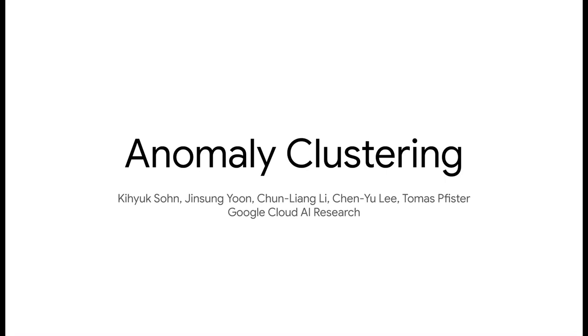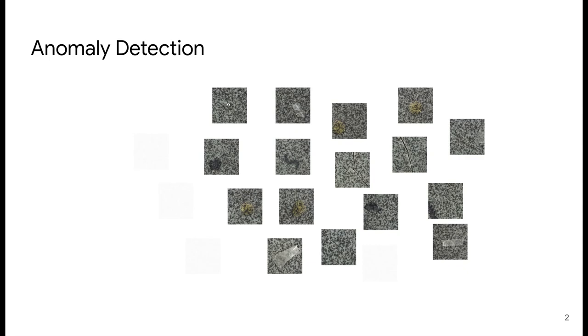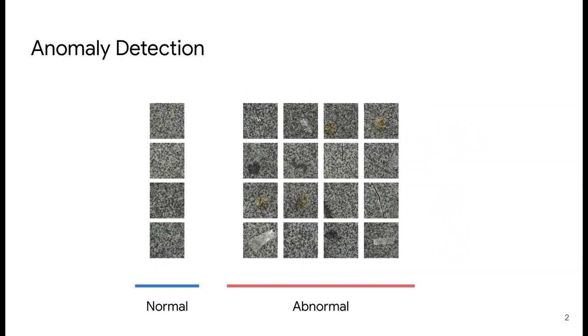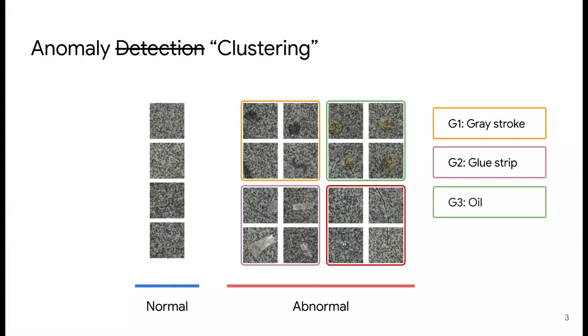Given unlabeled images, anomaly detection aims to divide them into two groups, each of which represents normal and abnormal images. On the other hand, anomaly clustering aims to group images into coherent clusters of anomaly types.